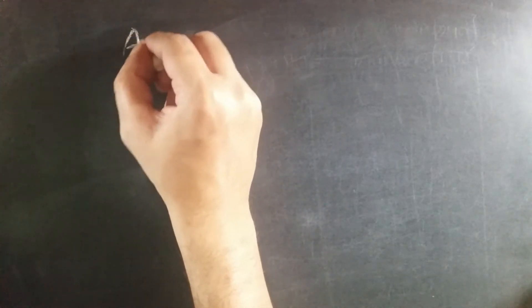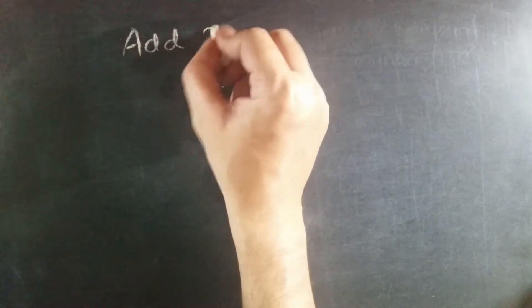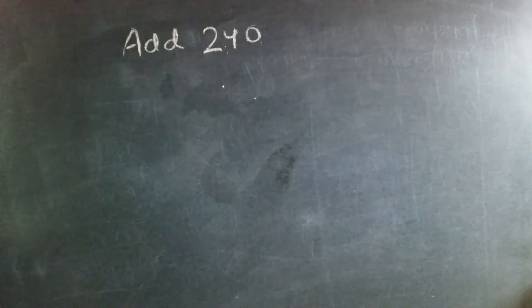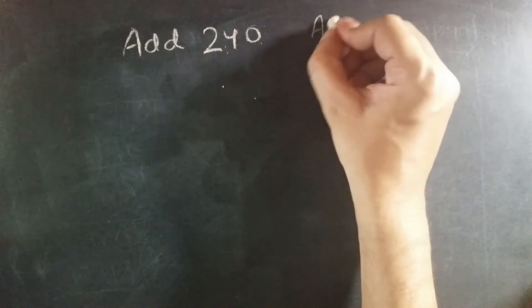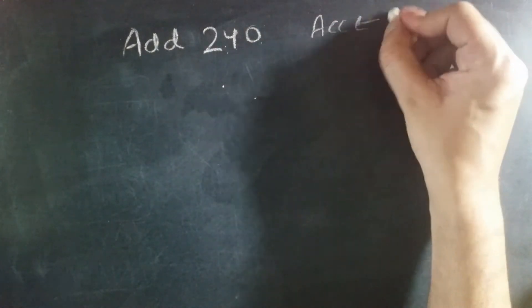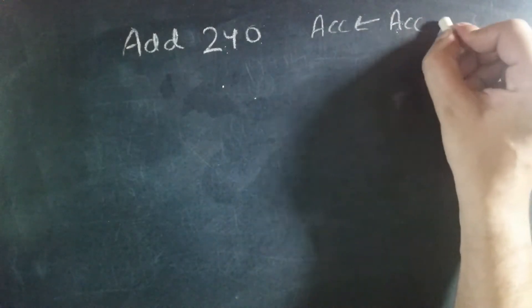Hi everyone. In the last video I showed you what general purpose registers of single accumulator organization are. In this video I'll show you how those work to execute an instruction. The instruction that we are going to execute is ADD 240, a very basic instruction. What that means is the accumulator will store the result of accumulator plus whatever is located in memory location 240.